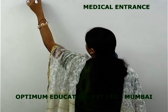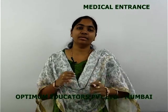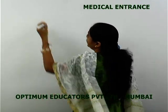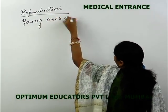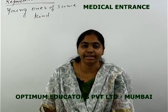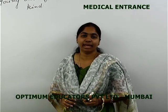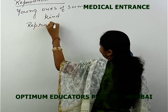Talking about reproduction: human beings, as a subset of animals, all show sexual reproduction. Reproduction is essentially when any animal or organism gives rise to young ones of the same kind. In terms of mechanism, reproduction can be conveniently divided into two broad categories — sexual and asexual reproduction.